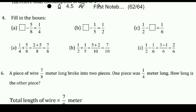Next problem: 5 upon 8 and 1 upon 4. We can solve 5 upon 8 minus 1 by 4. Take the LCM of 4 and 8, which is 8. Like this you can solve. If you are not getting it, you can ask in the online classes.